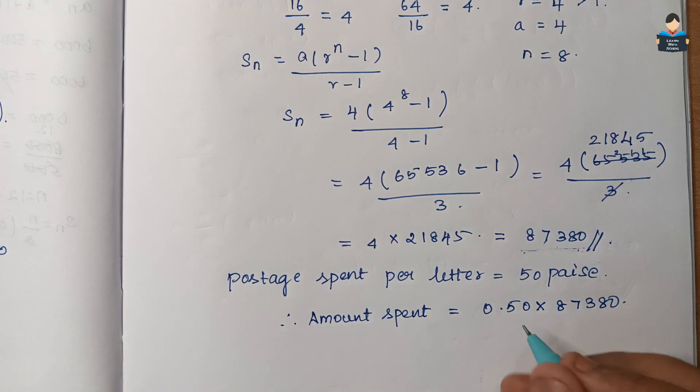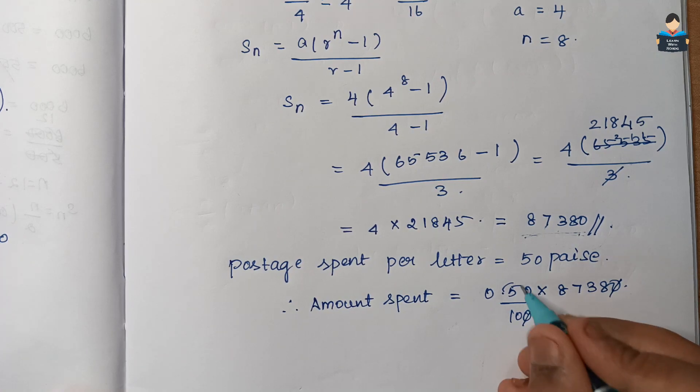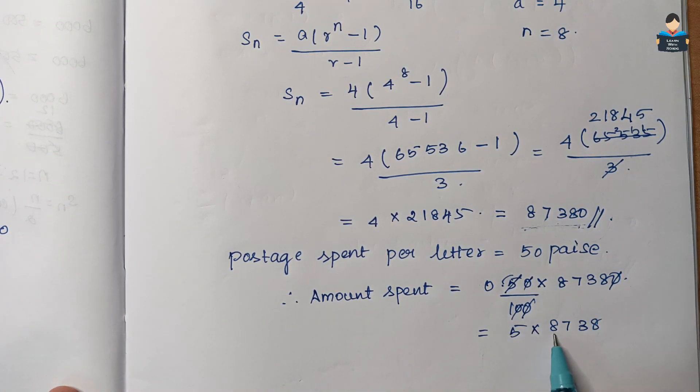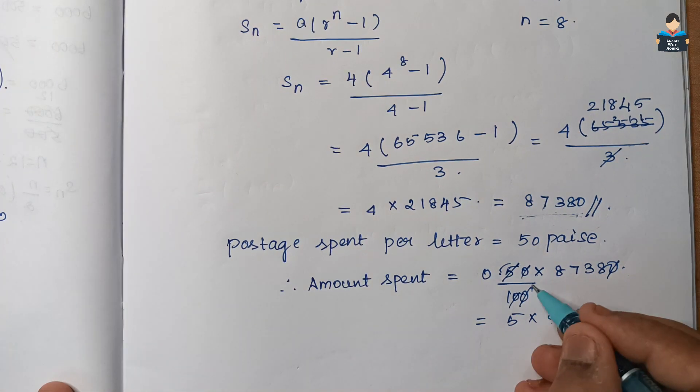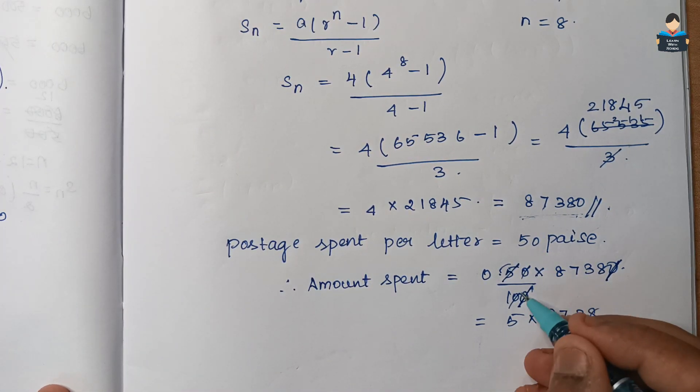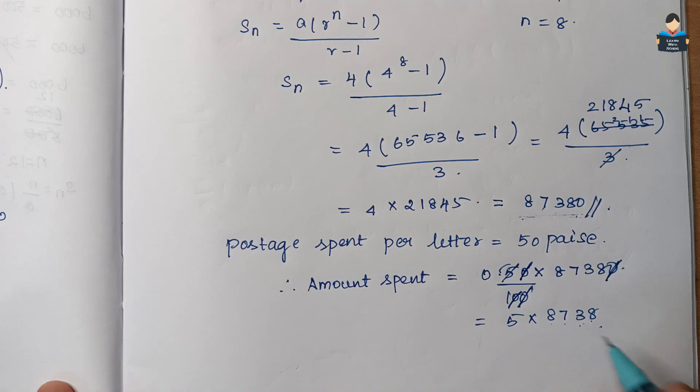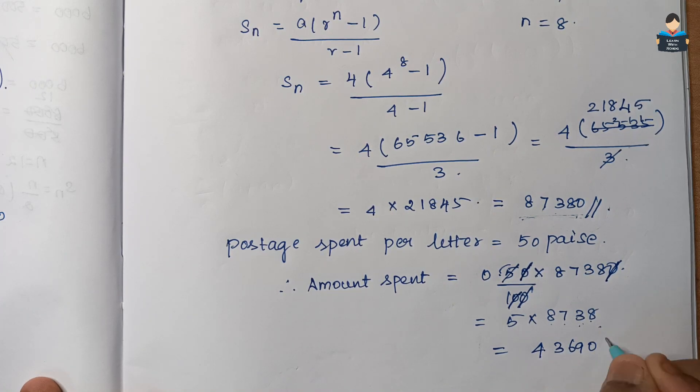Remove decimal by 100, simplify and cancel. Now 5 into 8738. If we multiply these two, it costs 43,690 rupees for the total 87,380 letters after the 8th set.